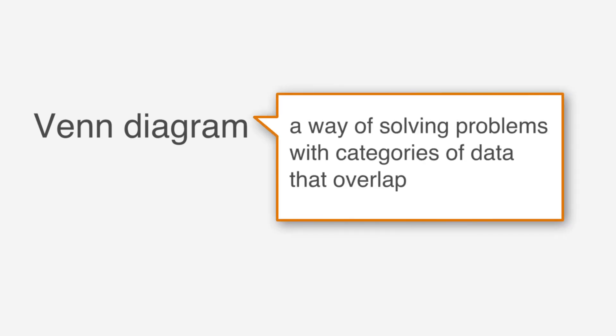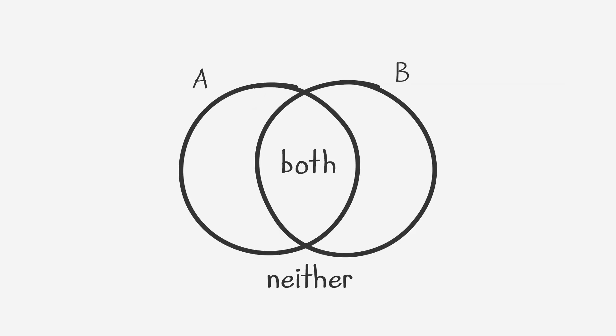A Venn diagram is a way of solving problems with categories of data that overlap. You'll be able to recognize a Venn diagram problem because the problem will give you two or more groups of items and ask for amounts in either group, both groups, or neither.